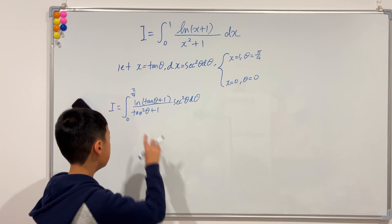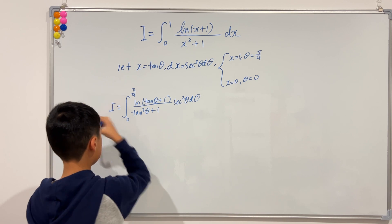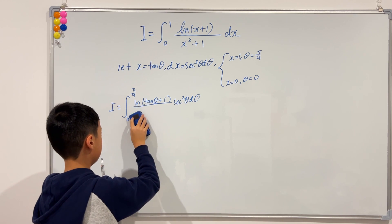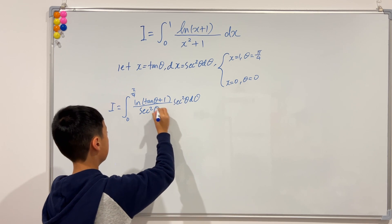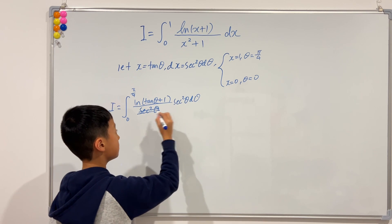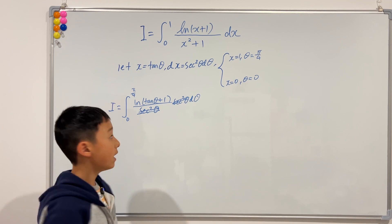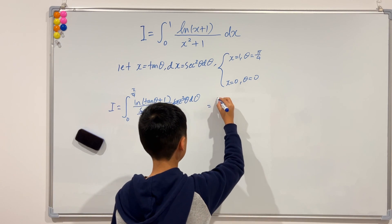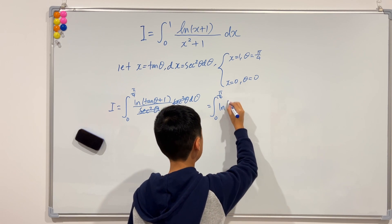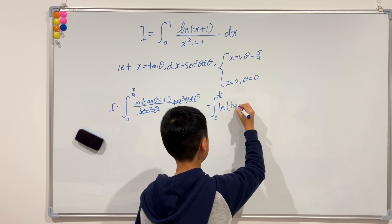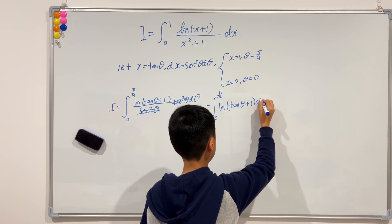As I said, tangent squared theta plus 1 is actually sec squared theta, so we can cancel the sec squared terms. All we have left is the integral from 0 to pi over 4 of ln of (tangent theta plus 1) d theta.